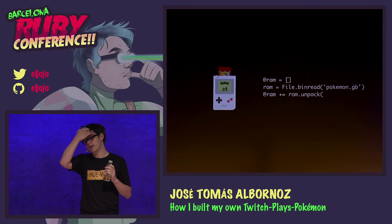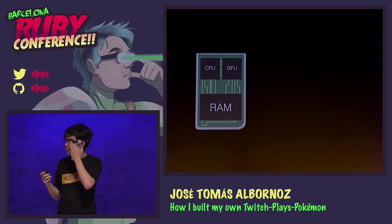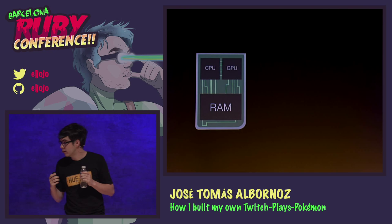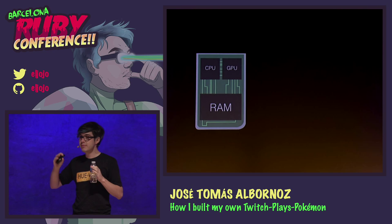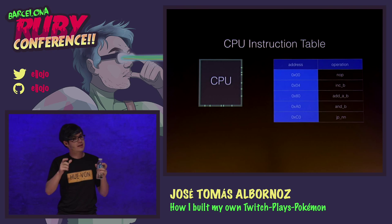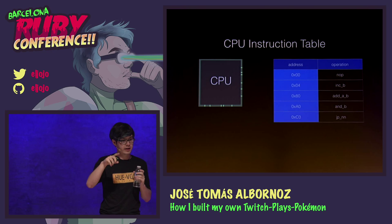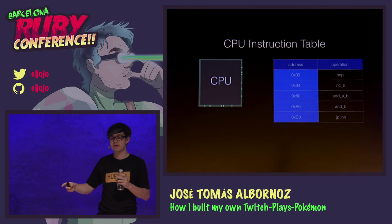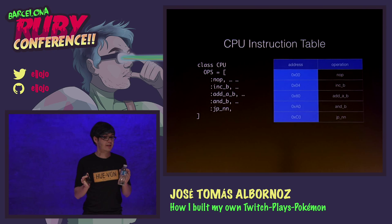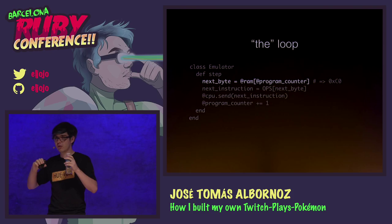What happens in the real Game Boy when you put the game in is that the console dumps the whole cartridge into the RAM. If we want to write our own emulator, we need to do the exact same thing — we just dump the whole binary file into a big array. When you load the Game Boy, the CPU loads the first byte of the RAM and compares it in an instruction table. The instruction table is a hard-coded list of all the things the CPU can do — very small actions. For example, at byte 0xC0, the instruction will jump execution to another sector of the game. In our Ruby version, we have to do the exact same thing.